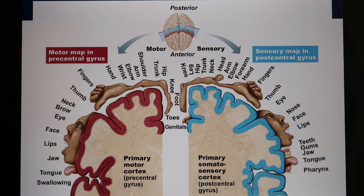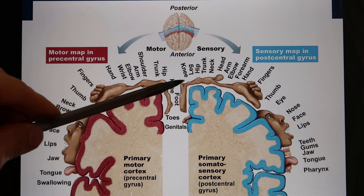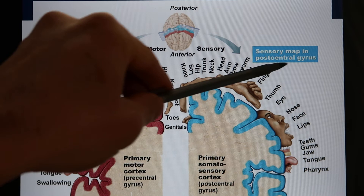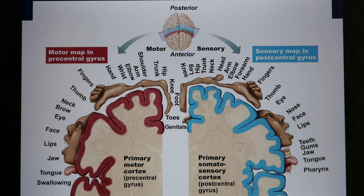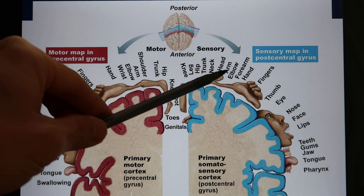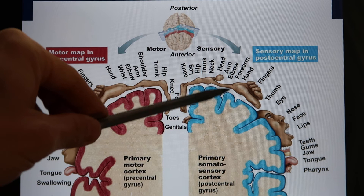Your somatosensory cortex is located in the parietal lobe, specifically in the postcentral gyrus. The cerebral cortex has ridges called gyri and grooves called sulci. In the postcentral gyrus, you find a whole body map: different body parts send their sensory signals to different specific areas of this cortex.